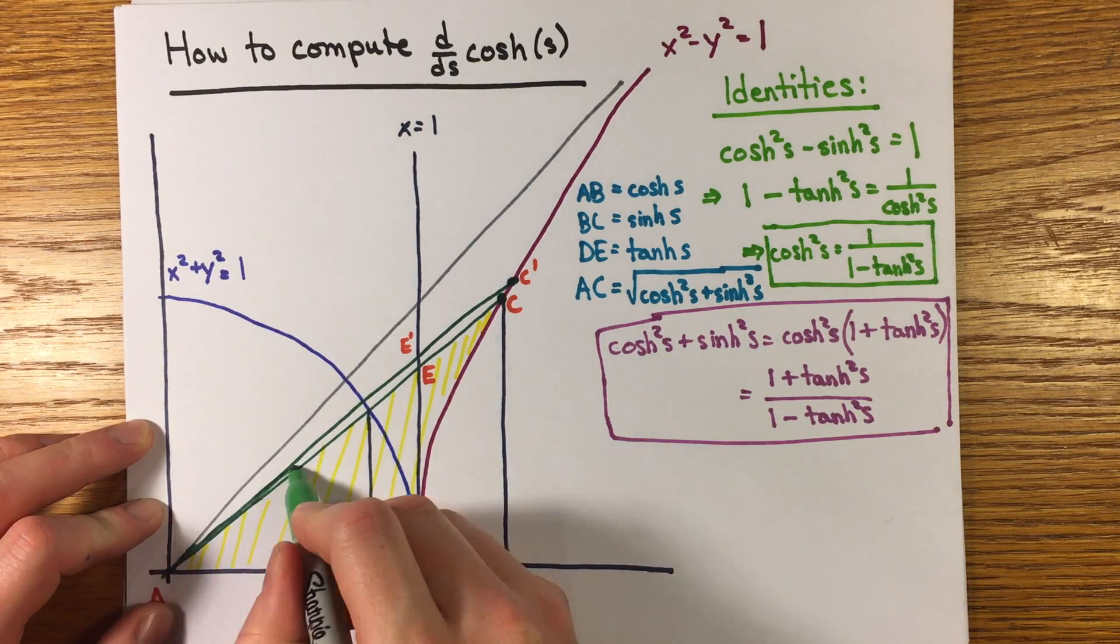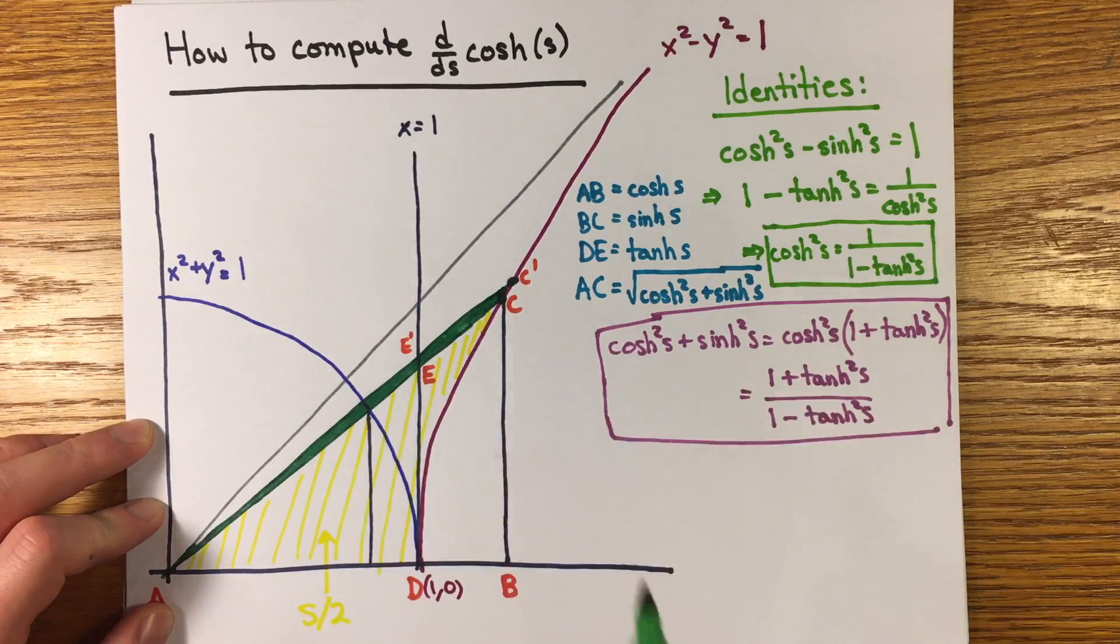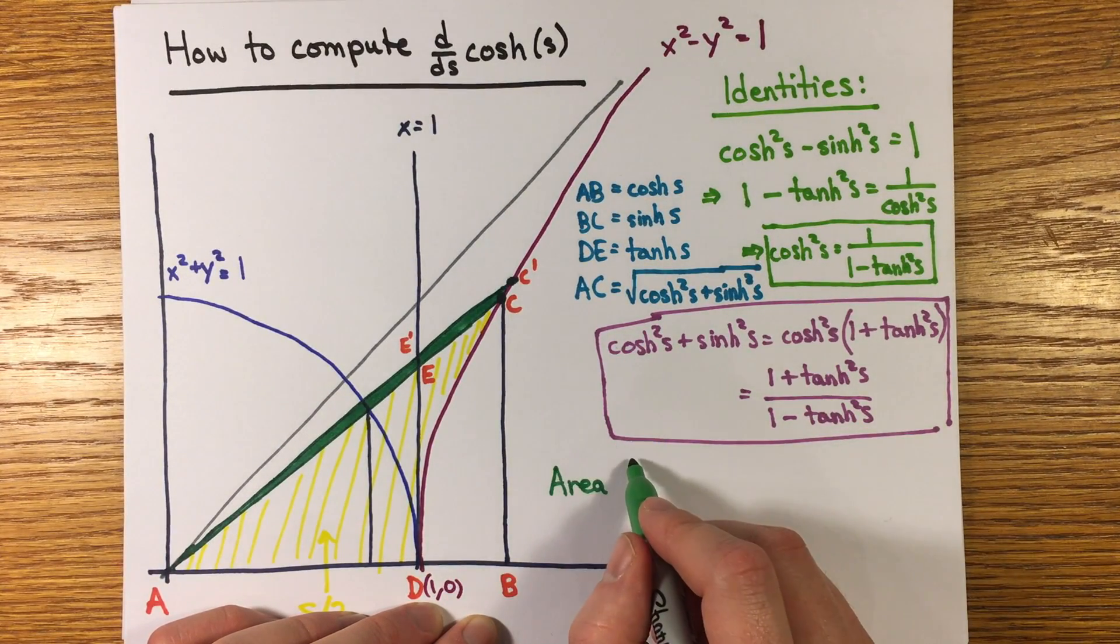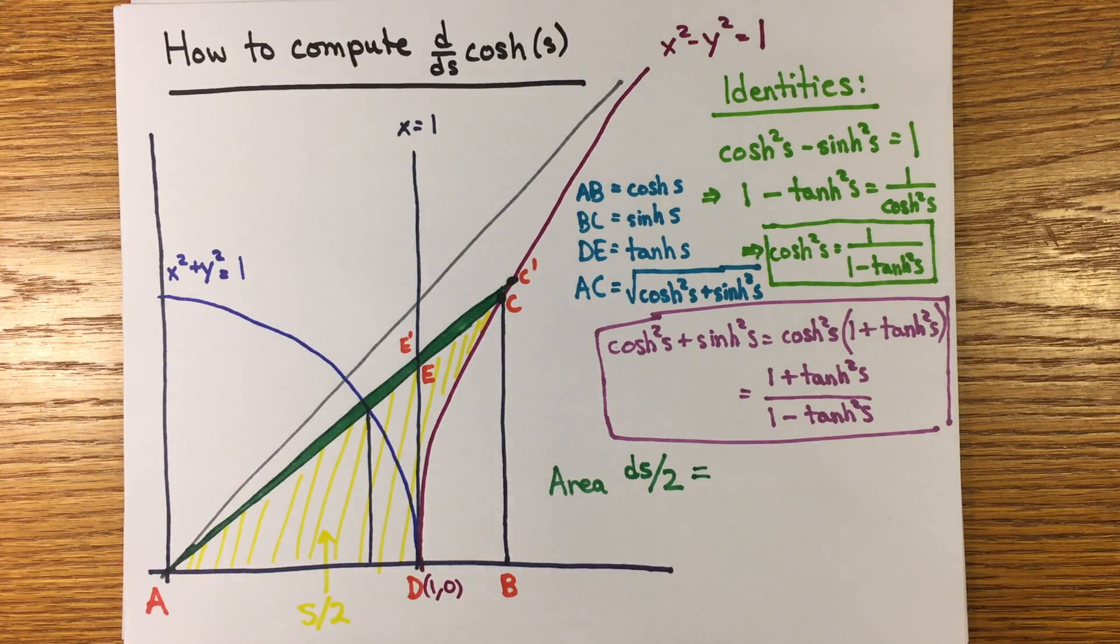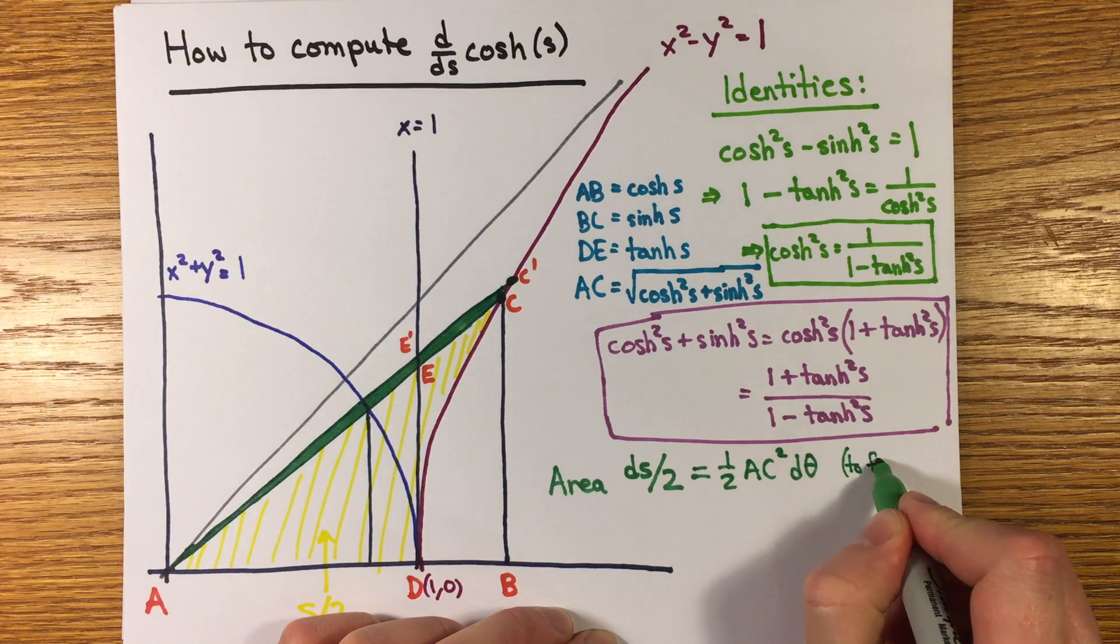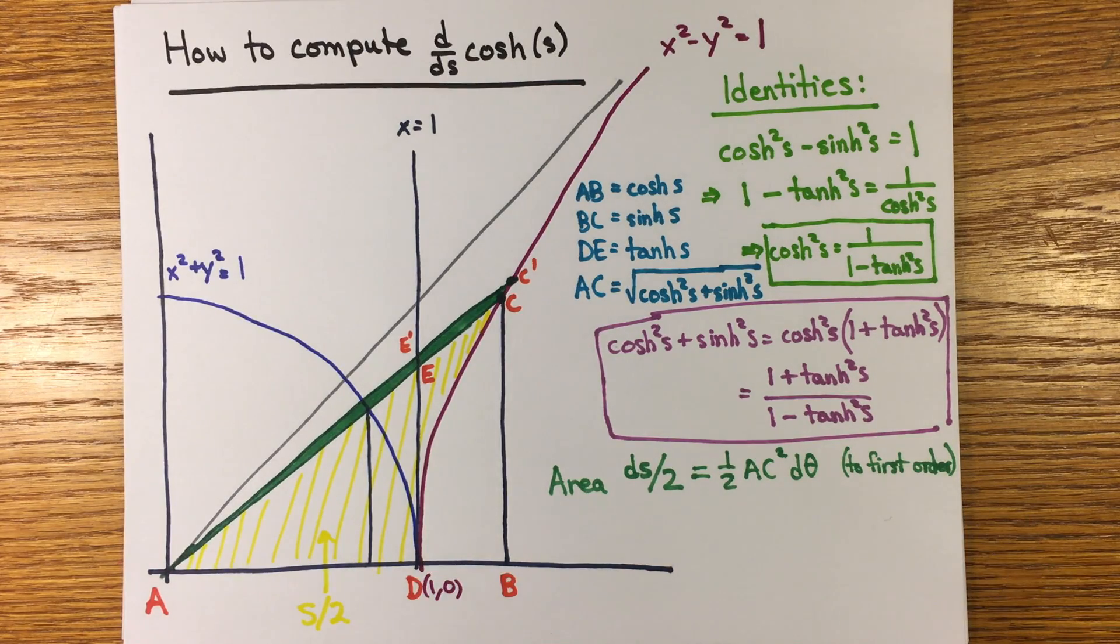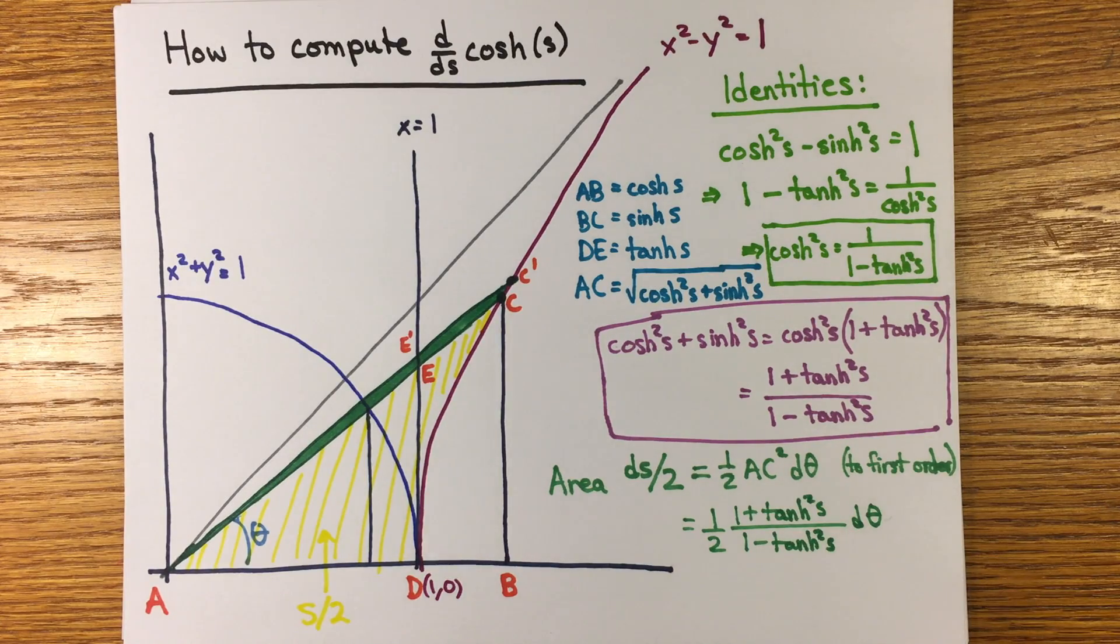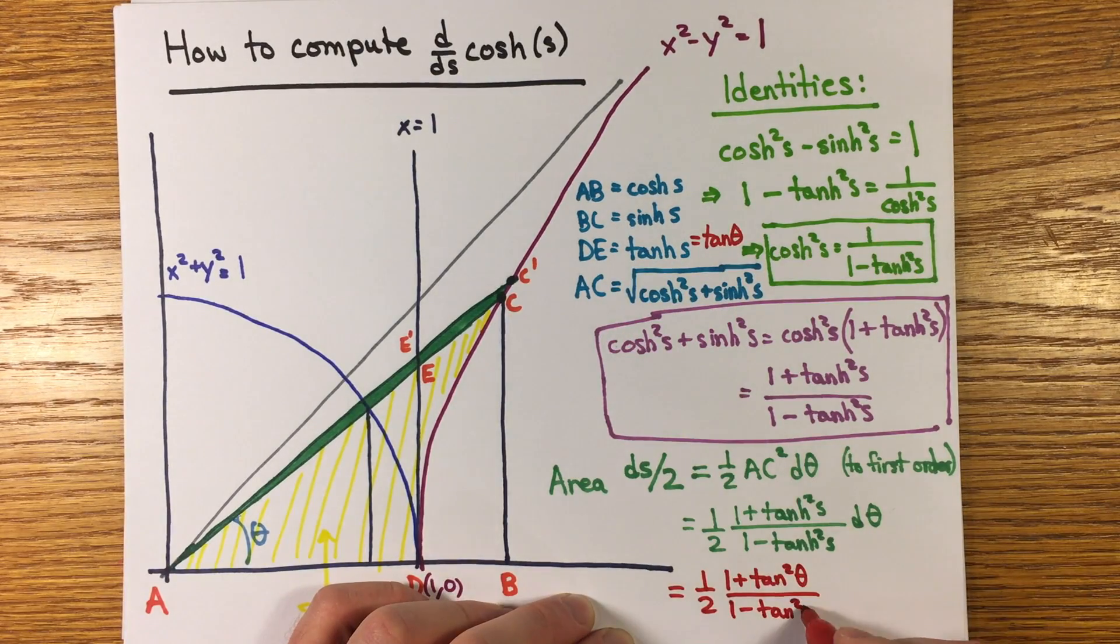This area of the additional sector ds over two up to first order in d theta is the same as the area of a sector of the circle with angle d theta and radius AC, which is one half AC squared d theta. So ds over two is equal to one half one plus tanh squared theta divided by one minus tanh squared theta.